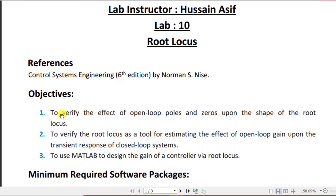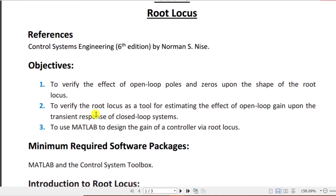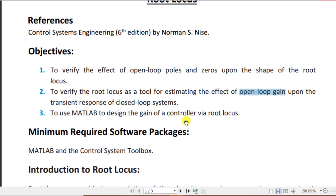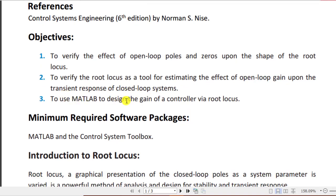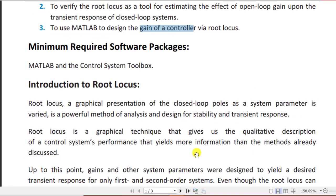Here are the objectives. We have to verify the effect of open loop poles and zeros upon the shape of the root locus, and verify the root locus as a tool for estimating the effect of open loop gain upon the transient response of closed loop systems. Thirdly, we have to use MATLAB to design the gain of a controller based on root locus. The software packages required are MATLAB and the Control Systems Toolbox.